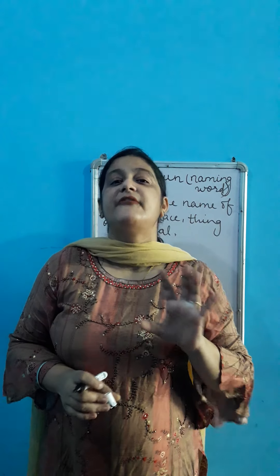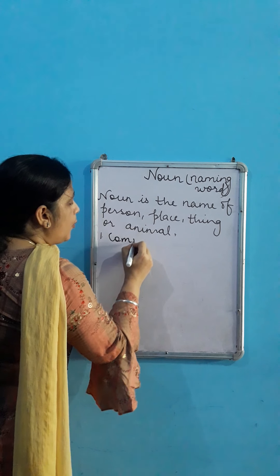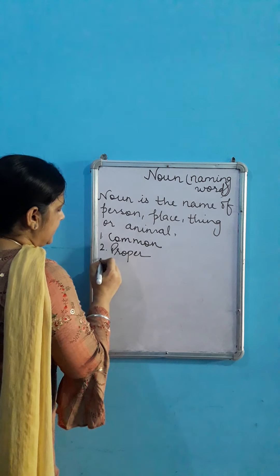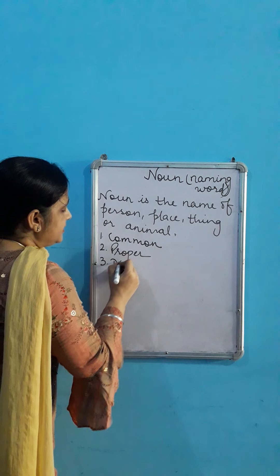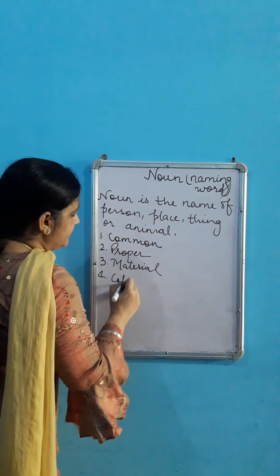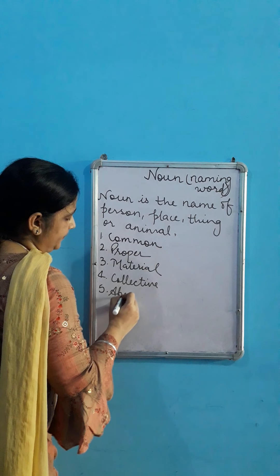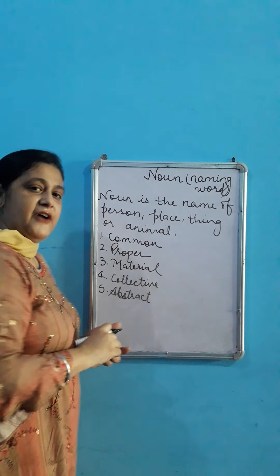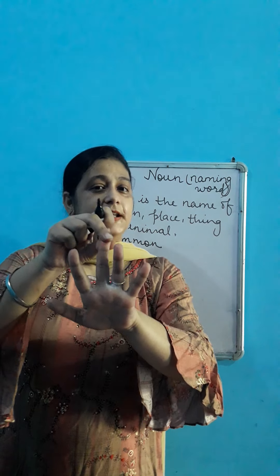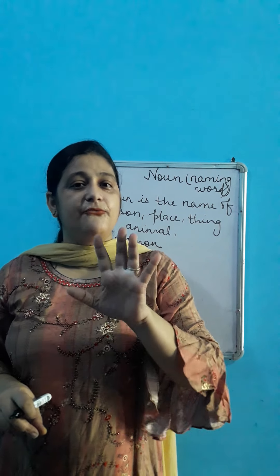We are having five kinds of noun. How many kinds of nouns we are having? Five kinds. Common noun, proper noun, collective noun, then material noun, and then abstract noun. We have five fingers and we are having five nouns — common, proper, material, collective and abstract noun. These are the five kinds of noun.